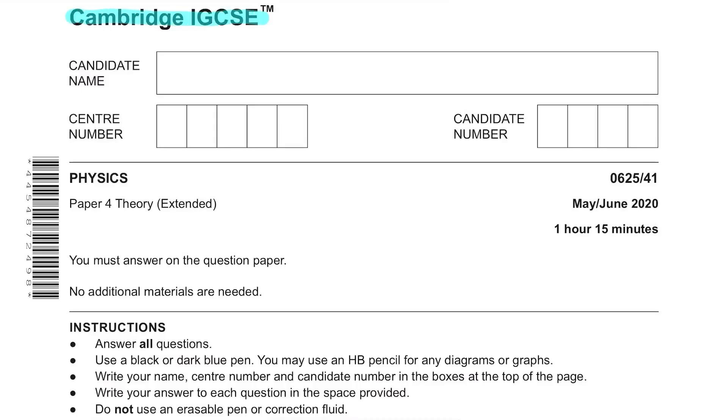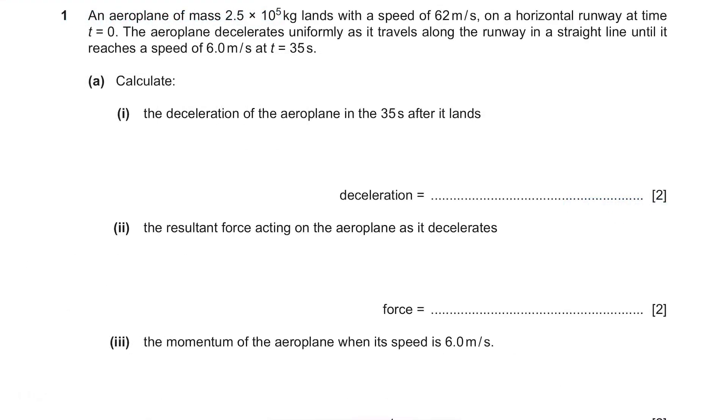This is the solved version of Cambridge IGCSE Physics May June 2020 Paper 4 Variant 1. Question 1.